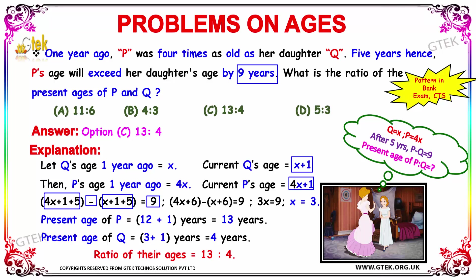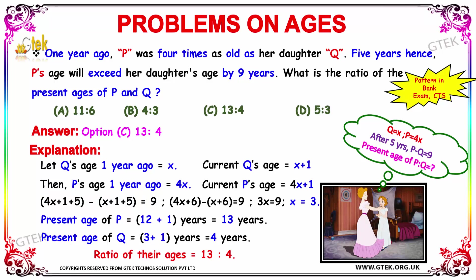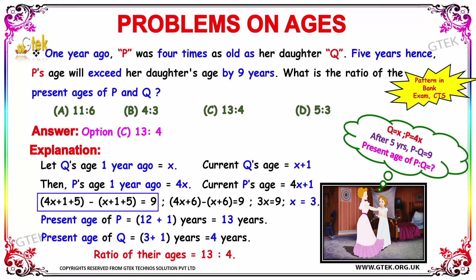P's age will exceed her daughter's age by 9 years. Solving this equation, we can write 4X plus 6 minus (X plus 6) is equal to 9. On solving, we get 3X is equal to 9, which gives X to be 3.